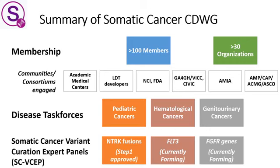The Somatic Cancer CDWG has over 100 members from 30 different organizations, including academic medical centers, laboratory diagnostic test developers, government agencies like the National Cancer Institute and the U.S. Food and Drug Administration, other partner consortiums like the Global Alliance for Genomics and Health, as well as professional organizations such as the American Medical Informatics Association and the Association for Molecular Pathology.